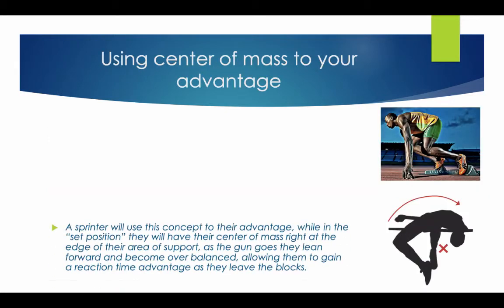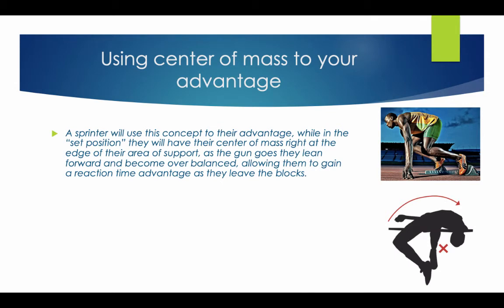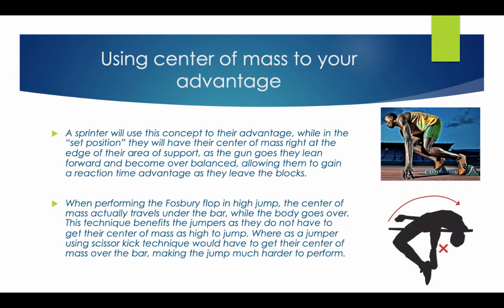Using your centre of mass to your advantage: a sprinter will use this concept of overbalancing to their advantage. While in the set position, they will have their centre of mass right at the edge of their area of support. As the gun goes off, they lean forward and become overbalanced, allowing them to gain a reaction time advantage as they leave the blocks. When performing a Fosbury flop in high jump, the centre of mass actually travels underneath the bar while the body goes over. This benefits the jumper, as they don't have to get their centre of mass as high, whereas a jumper using the scissor kick technique would have to get their centre of mass above the bar, making the jump much harder to perform.